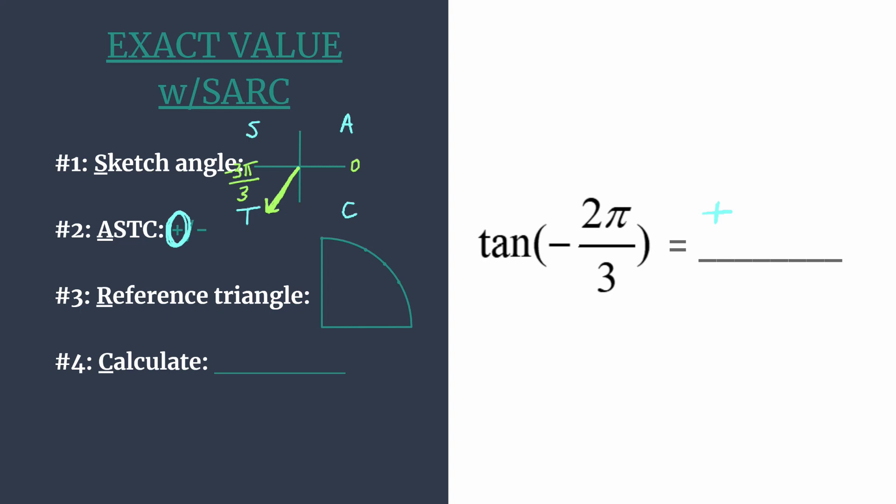Now that we've decided our exact value is going to be positive, we can move on to the third step. Let's find the reference angle, our special right triangle, and coordinates. The reference angle is just the amount of rotation from the terminal side of your angle to the x-axis, so that's this angle right here.